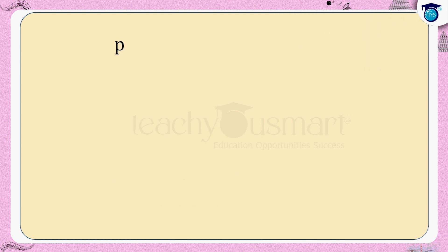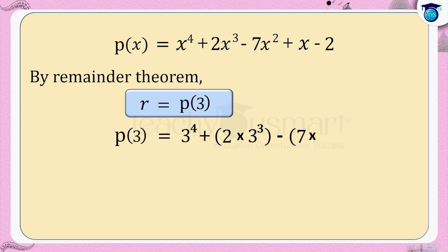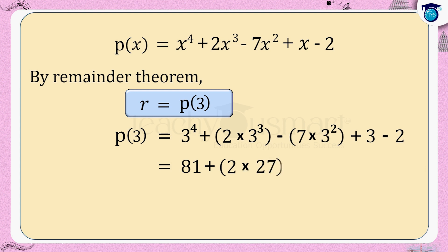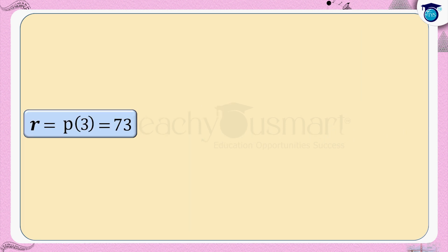We have p of x equals x raised to 4 plus 2x cubed minus 7x squared plus x minus 2. So p of 3 equals 81 plus 2 multiplied by 27 minus 7 multiplied by 9 plus 3 minus 2, which equals 81 plus 54 minus 63 plus 3 minus 2, equals 73. That is r equals p of 3 equals 73. Now let us verify this result by doing actual division.